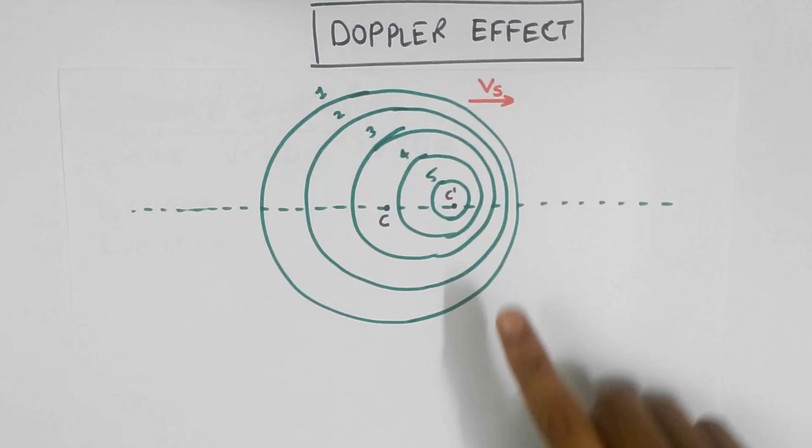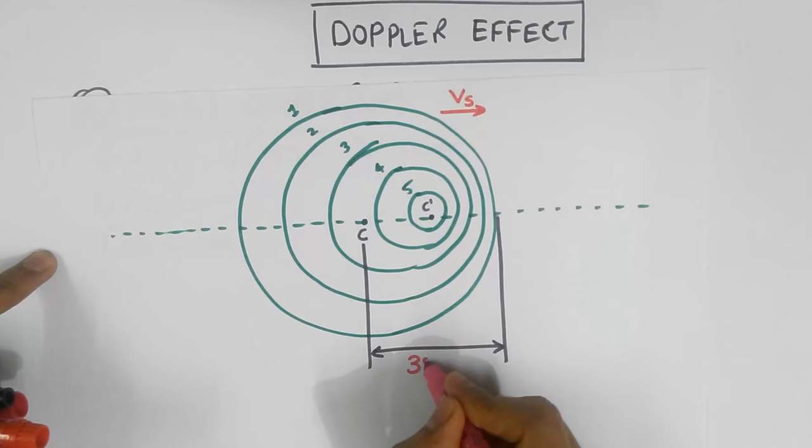First, let's calculate the new wavelength over here. Again, notice that this distance is 350 meters. But in that one second, the source is also moving at 200 meters per second.